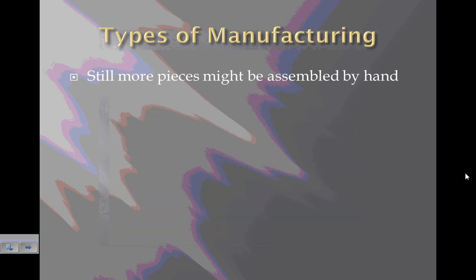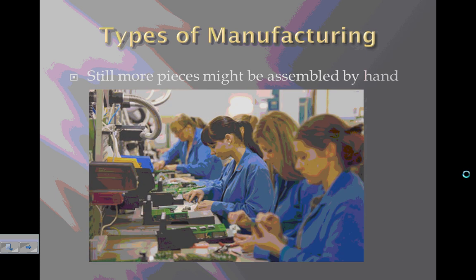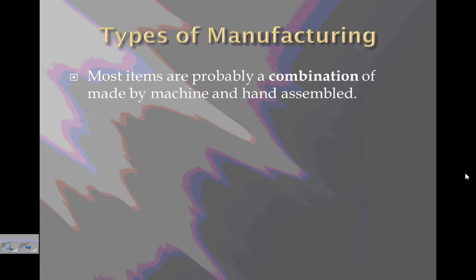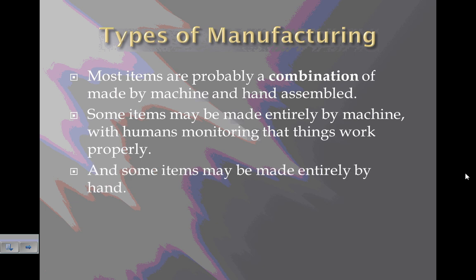Still, more pieces might be assembled by hand, especially smaller electronic pieces — people might put together the last few pieces. Most items are probably a combination of made by machine and hand assembled. Some items may be made entirely by machine, with humans just monitoring that things work properly and the machines keep working and putting things together properly. And some items may be made entirely by hand.